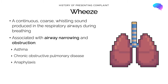Our next key symptom is wheeze — a coarse, continuous whistling sound produced in the respiratory airways during breathing. It's associated with airway narrowing and obstruction, so diseases such as asthma, chronic obstructive pulmonary disease, and anaphylaxis can cause wheeze. Wheeze may be audible without a stethoscope and may be reported by the patient or their carer.